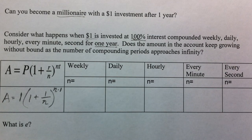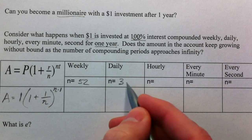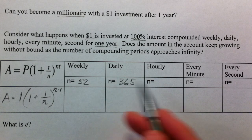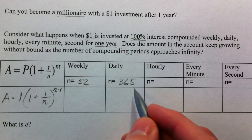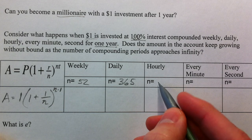So, weekly, N is going to be 52. Daily, that's going to be 365, 365 days. You can say 0.25 if you want to, take into account that extra quarter of a day for the leap year, right?